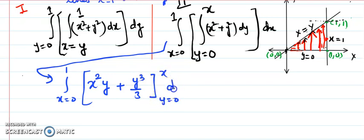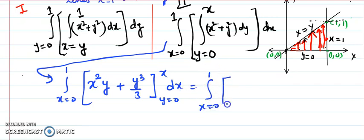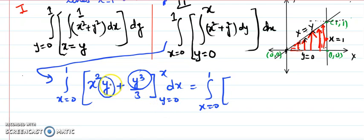The next step is plugging in the limits. When you put y equals x (upper limit), x squared times x becomes x cubed, and x cubed over 3 also results from the second term. When you put y equals 0 (lower limit), both terms give 0.